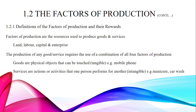We can use these factors of production to make new goods. Goods are physical objects that can be touched — they are tangible. For example, a mobile phone is a good that we can touch and use easily.